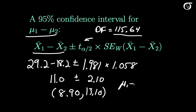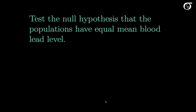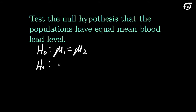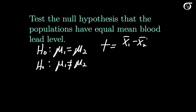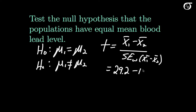This 95% confidence interval means we can be 95% confident that the difference in population means lies between 8.90 and 13.10. We can also carry out a hypothesis test of the null hypothesis that the two groups have equal population means, against a two-sided alternative. The t statistic is (29.2 minus 18.2) divided by 1.058, which equals 10.40.